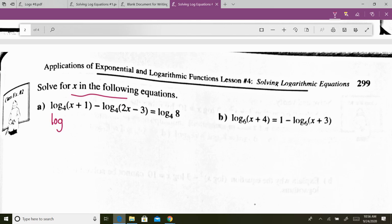So, it becomes Log base 4 of x plus 1 over 2x minus 3 equals Log base 4 of 8. I have log equaling a log. Bases are the same. What do I do? Lose the logs, and it's just the arguments you have to look at. Then it's just x plus 1 over 2x minus 3 is equal to 8.